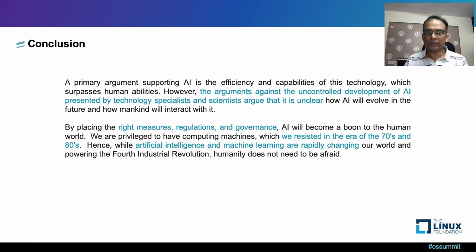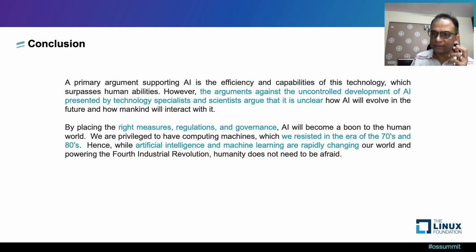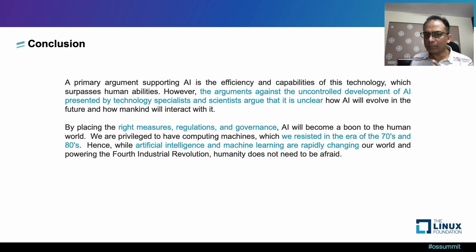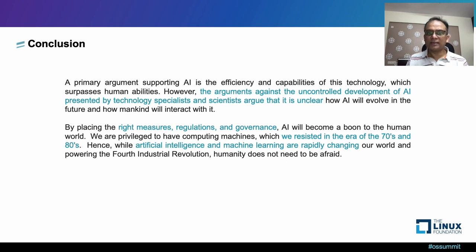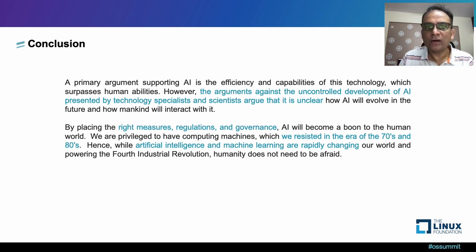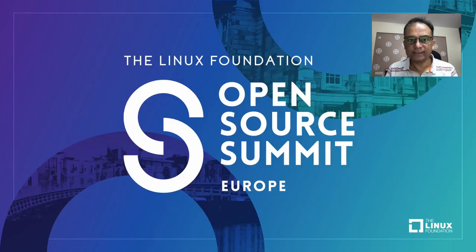Coming to the conclusion: the primary argument supporting AI is that the efficiencies and capabilities of this technology surpass human abilities. The argument around uncontrolled development of AI, presented by technologists and scientists, is that it is unclear, but by placing the right measures, regulations, and governance, AI will become a boon for humankind. We were privileged to computing machines which we resisted in the era of the 70s and 80s. Hence, while artificial intelligence and machine learning are rapidly changing our world and powering the fourth revolution, humanity does not need to be afraid — we should benefit from and leverage the benefits of AI. I hope this session was valuable and useful for you. Thank you.